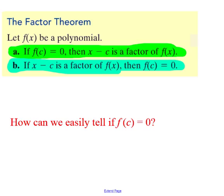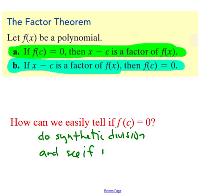There's this other thing called the factor theorem. And it says if f of x is a polynomial, if f of c is 0, then x minus c is a factor of f of x. That should make sense. And if x minus c is a factor of f of x, then f of c is 0. So it's sort of that two-way street. And given what we just learned, how can we easily tell if f of c is 0? We can do our synthetic division and see if the remainder is 0. Because if the remainder is 0, then we have a factor, and then we have f of c equals 0.